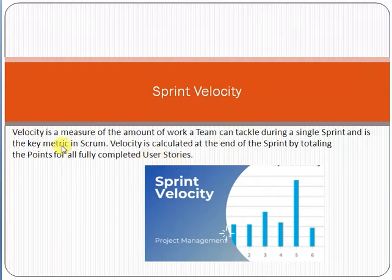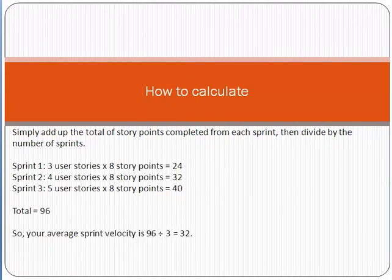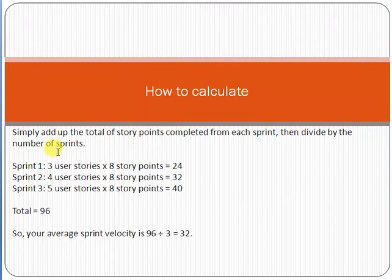How do we calculate sprint velocity? Simply, we add up the total story points completed from each sprint, then divide by the number of sprints. What is a story point? A story point is the estimated number we assign to a user requirement to complete.